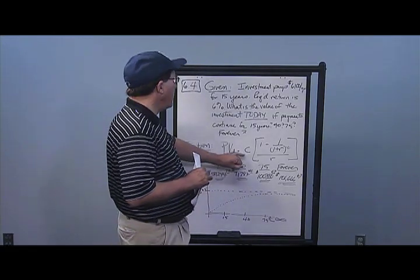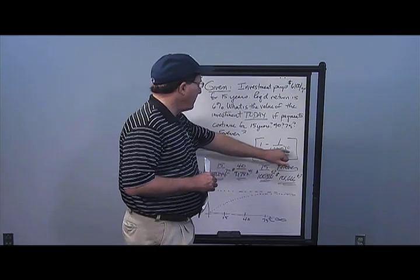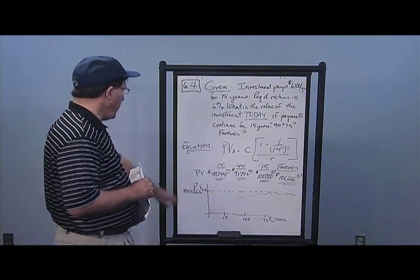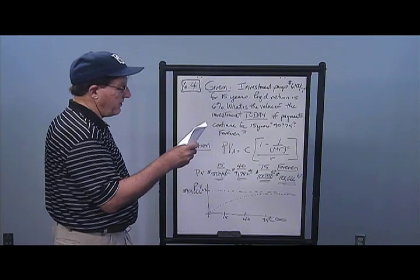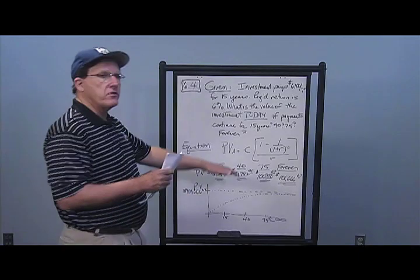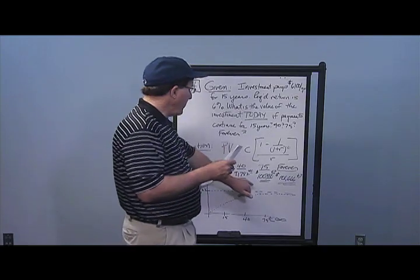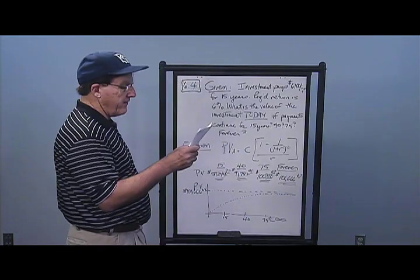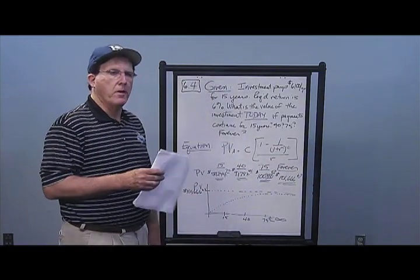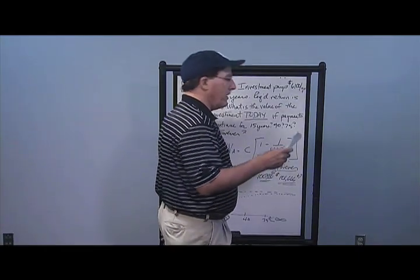C is $6,100, R is 0.06, T is 15. The present value for 15 years is $59,244.72. Extending to 40 years gives $91,782.42. For 75 years, I get $100,380.67. For forever, I plug a very large number in for T and get a value approaching $101,666.67.